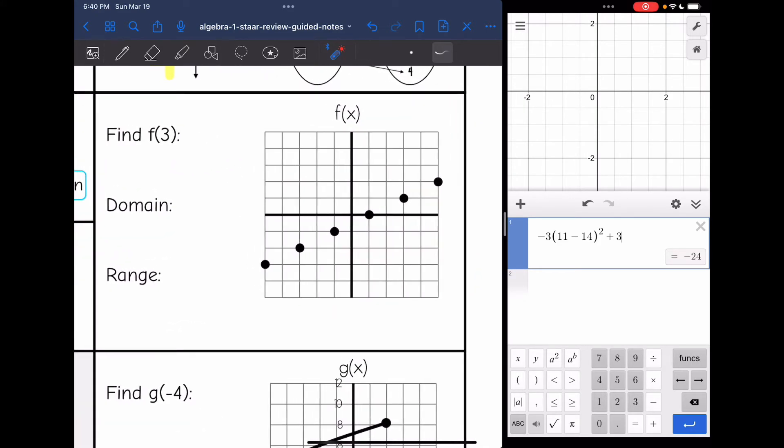So let's evaluate this function first. It says find f(3). That is giving me the x value since it's inside the parentheses. It's saying go find the output if the input is x equals 3. So x equals 3 is right here, and that matching output value is 1.